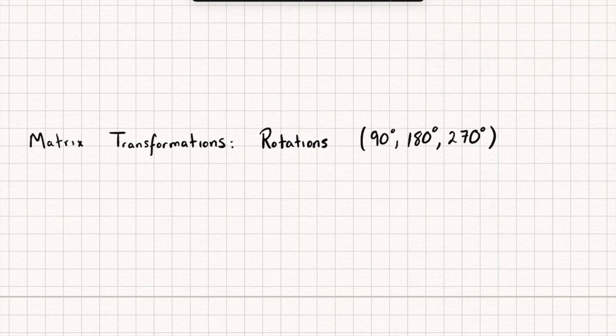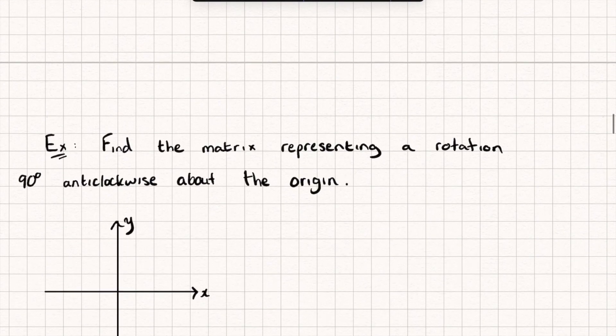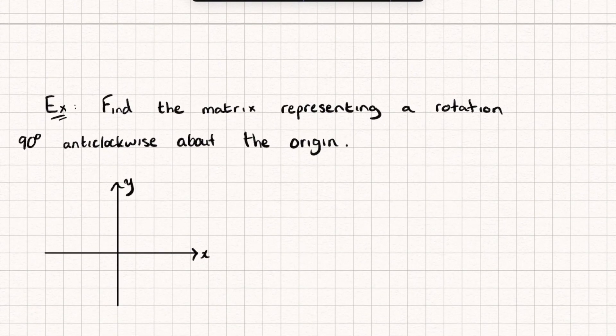Okay, so let's start off by taking a look at a rotation which is 90 degrees anti-clockwise about the origin. I'm going to start off by looking at my points (1,0), which is this one here, and (0,1), which is this point, and I want to see what's going to happen to them when I apply a rotation of 90 degrees anti-clockwise.